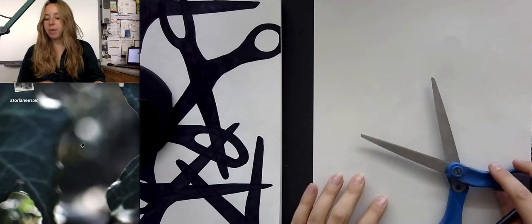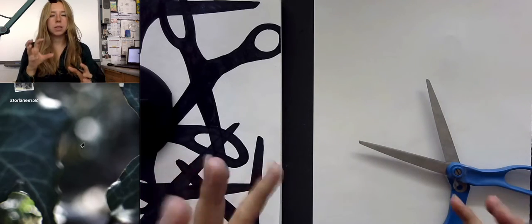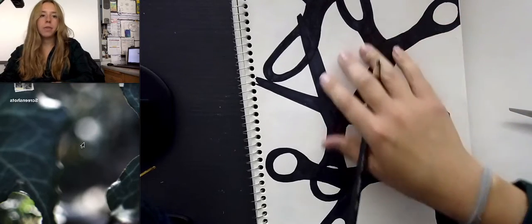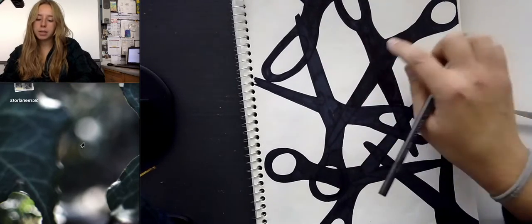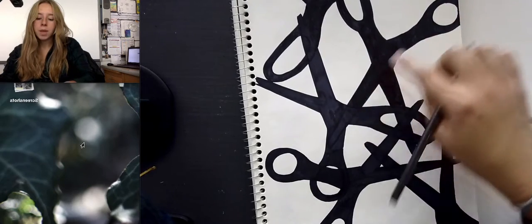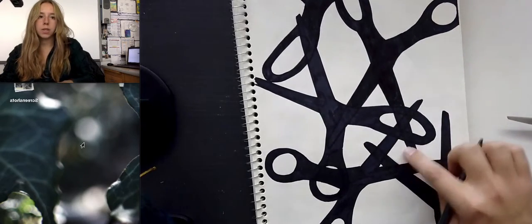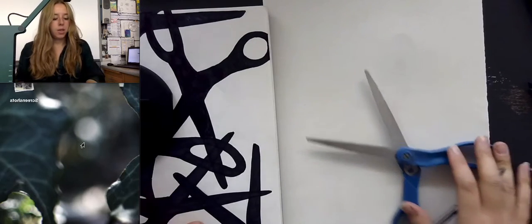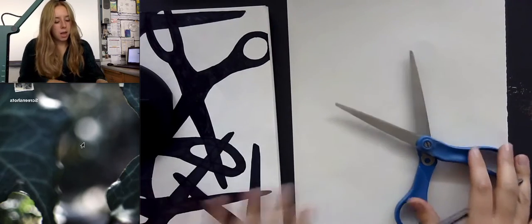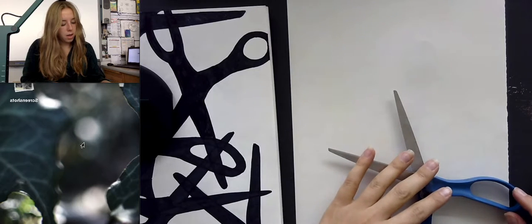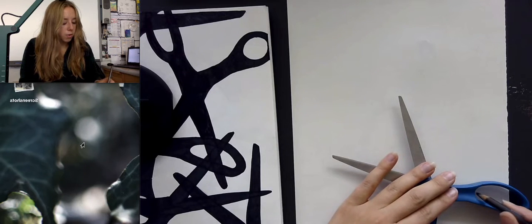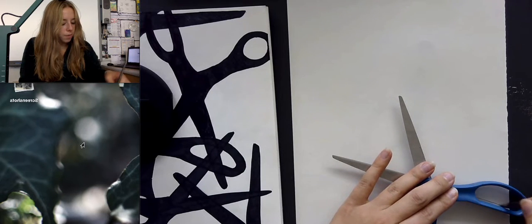However you want to do it, it's fine. I kind of randomly overlapped them in ways that filled the space equally, right? So there is an equal amount of black and white space, roughly. We call that positive and negative space. So the positive space is the stuff that I drew, the negative space is what's around those drawings. So you want to trace your scissors.